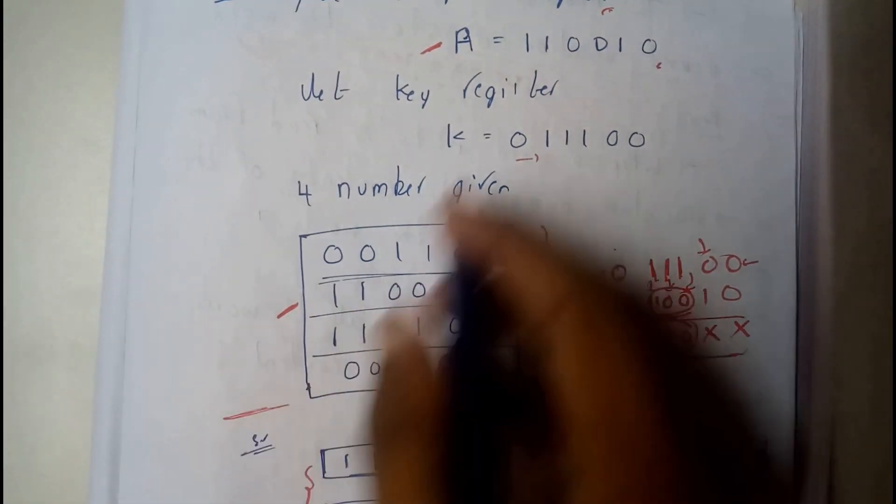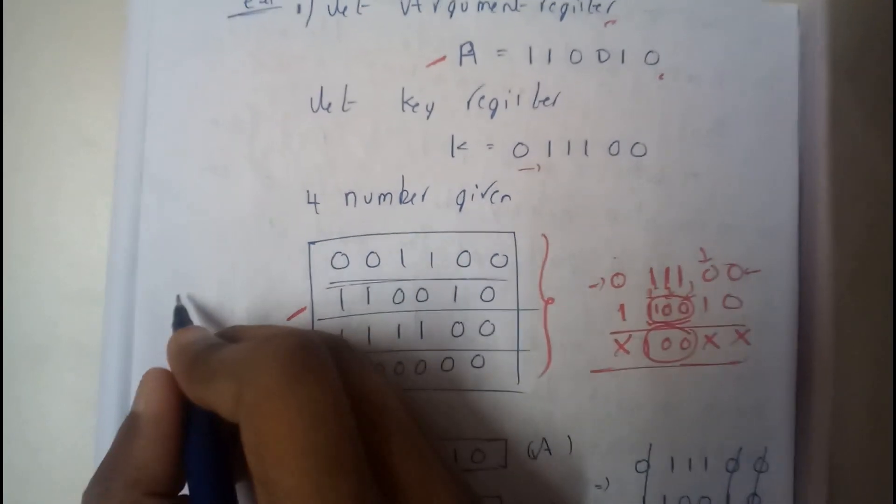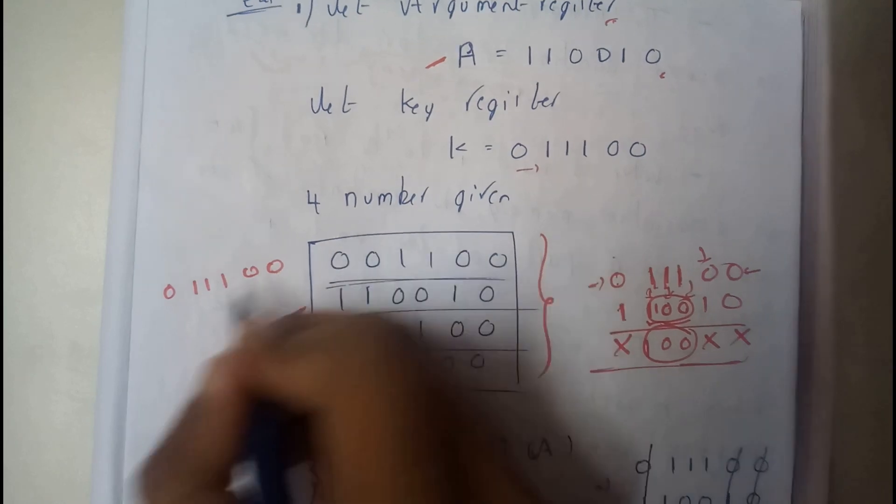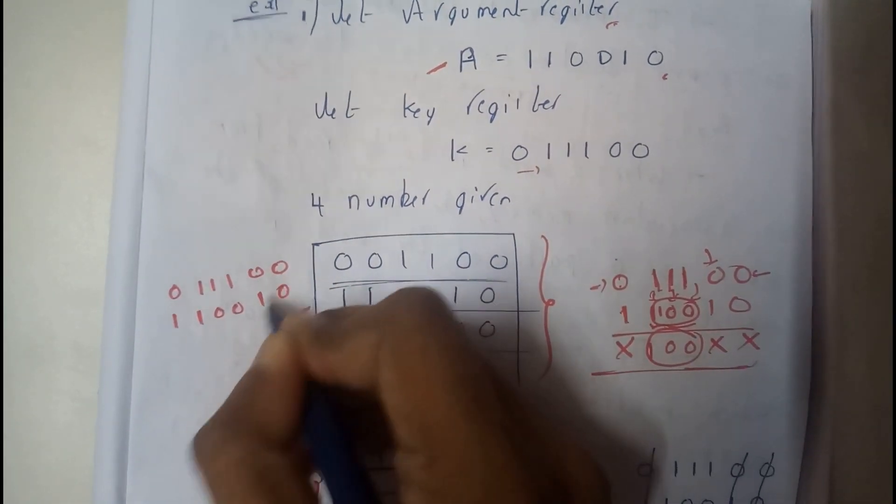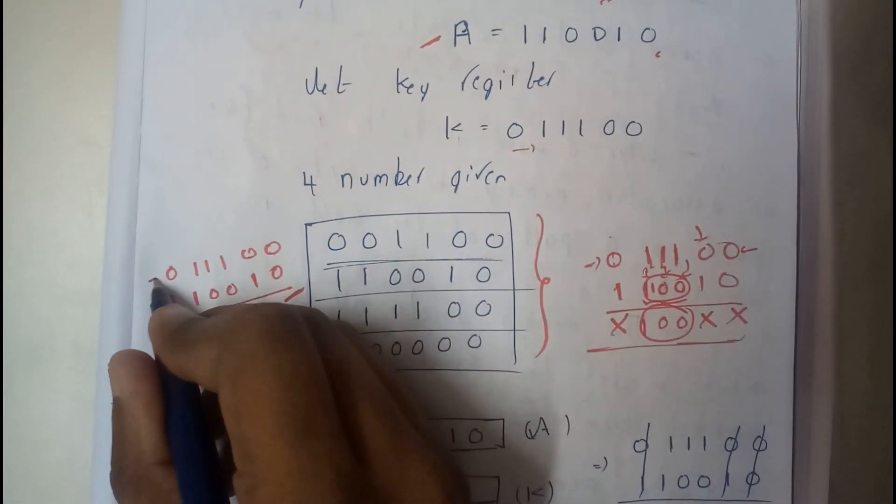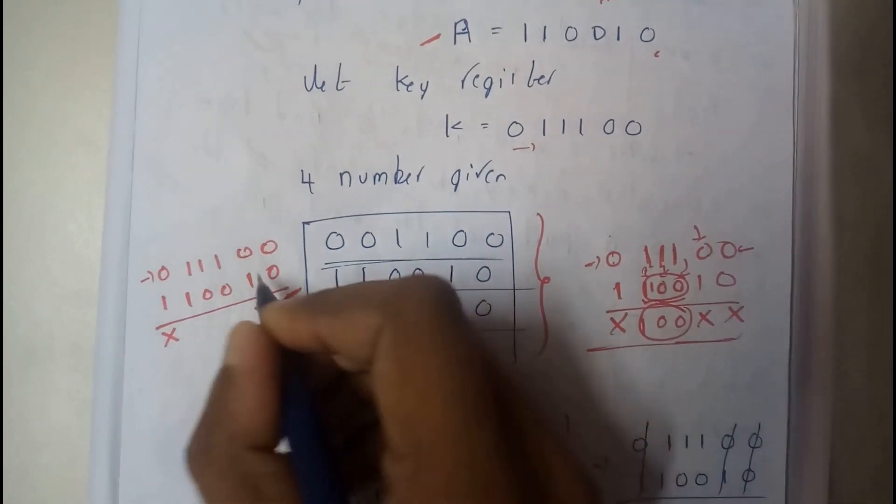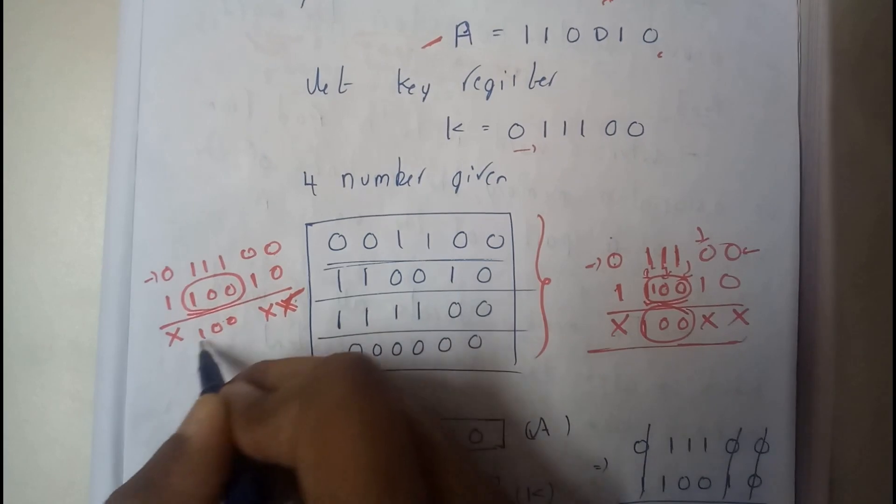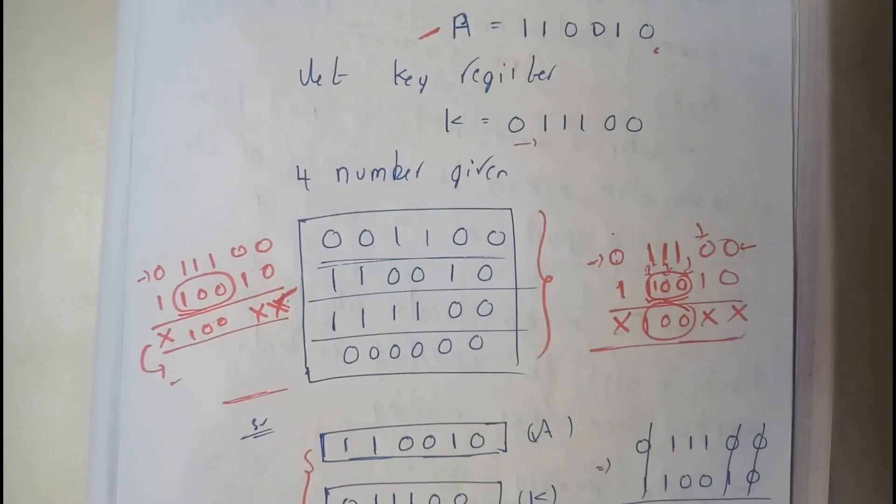So now we will be doing an operation between A and K. So initially write the key value above 011100 and write the argument value below 110010. So wherever we are having 0 in the key place, X as a result. And now just copy this value right below it. So this is our new value which we will be checking whether it is matching or not.